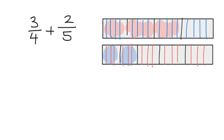Anyway, the idea is we no longer have three-fourths — we can name it something different. Counting all the pieces across the three shaded fourths, we get fifteen out of twenty. So it's fifteen-twentieths.